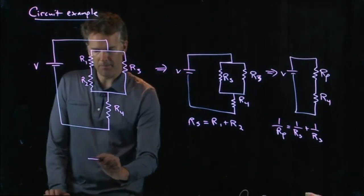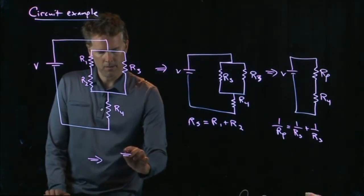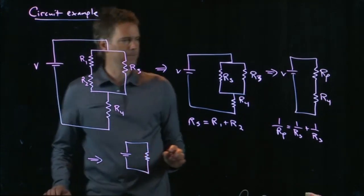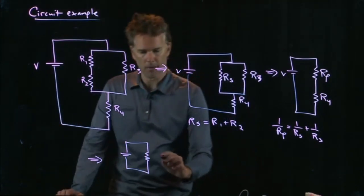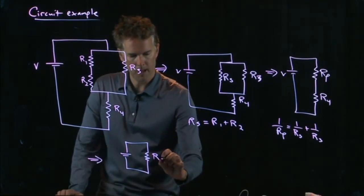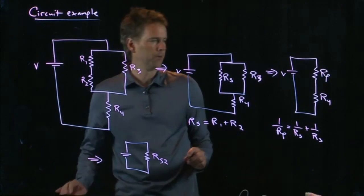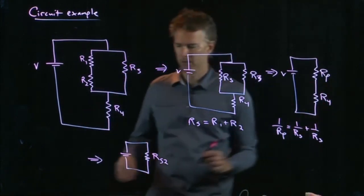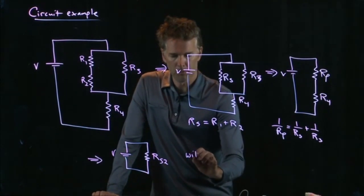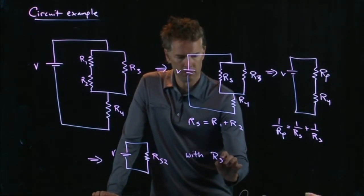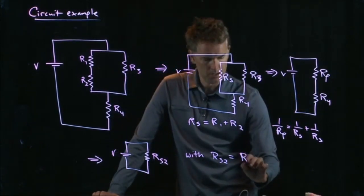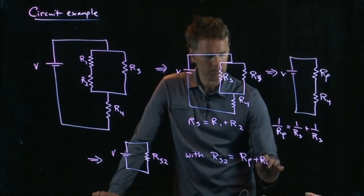And then the final step is that. And we'll call that one R sub S2. RS2 is just going to be RP plus R4.